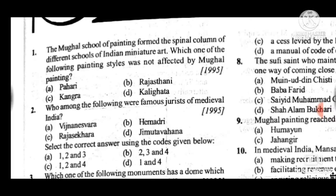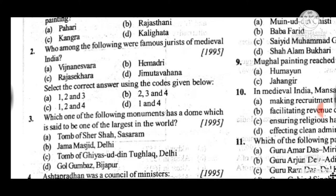Question 2: Who among the following were famous jurists of medieval India? Answer is C — one, two, and four: Vijnanesvara, Hemadri, and Jimutavahana. Question 3: Which one of the following monuments has a dome said to be one of the largest in the world? Answer is D, Gol Gumbaz, Bijapur.